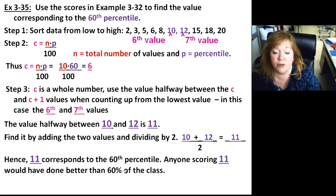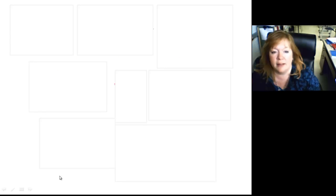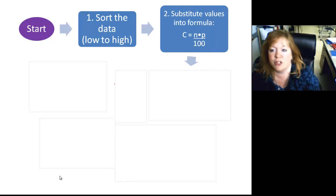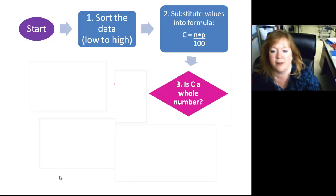Let's look at a flow chart here just so that we don't get confused about it. Right here, you start out. You sort your data. That's your first step. Then you substitute the values into the formula C equals N times P over 100. This gives you the location of that percentile data piece in your data. Then you ask yourself, is C a whole number?